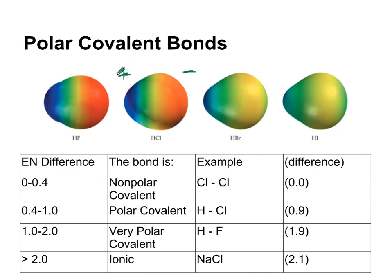If the electronegativity difference is 1 to 2, it's a very polar covalent bond. It's a very polar molecule. So it's going to have even greater partial negative and positive charges.